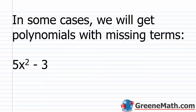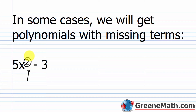Somewhere in your section on dividing polynomials, you're going to get this kind of subsection that talks about dividing polynomials with missing terms. It's not any more difficult. In some cases, we will get polynomials with missing terms. If you look at this first example, we see 5x squared minus 3. If my highest power on x is a 2, I need to go down in order — I need an x to the first power, and I don't have it. That's what I mean by a missing term.